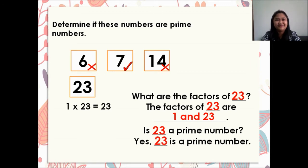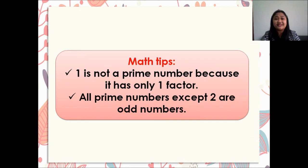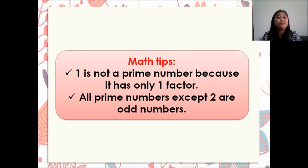Alright, very good. Now we have here math tips. Number one: 1 is not a prime number because it has only one factor, which is 1 times 1. Number two: all prime numbers except 2 are odd numbers.